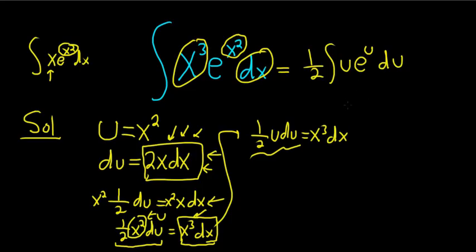So u e to the u is something we can do. We can do it with integration by parts or we can use tabular integration. Let's use tabular because it's faster.